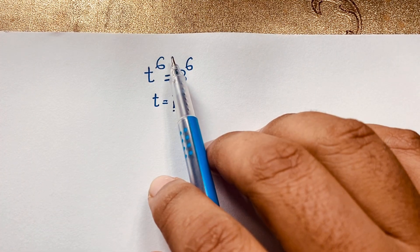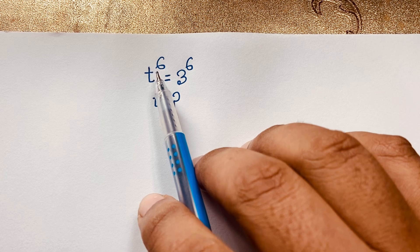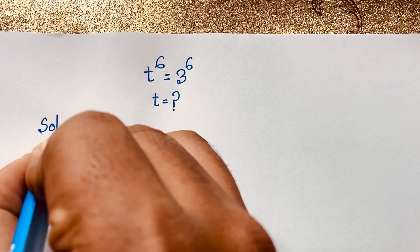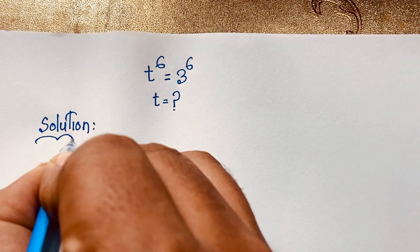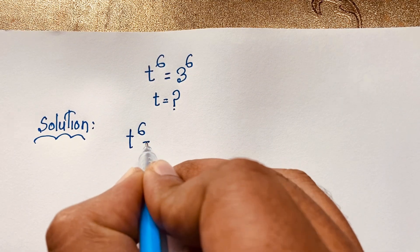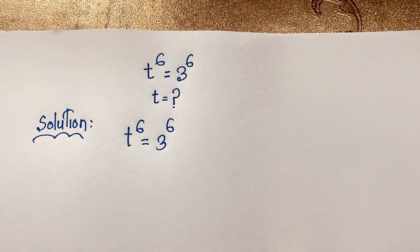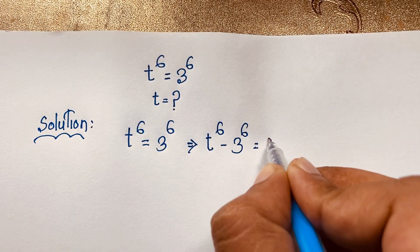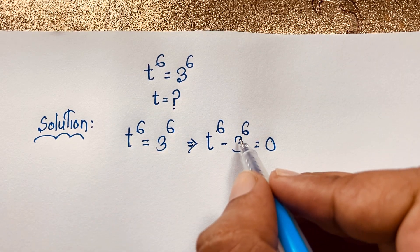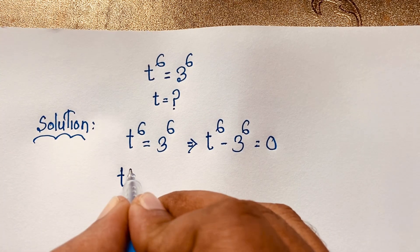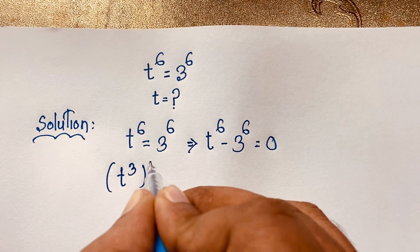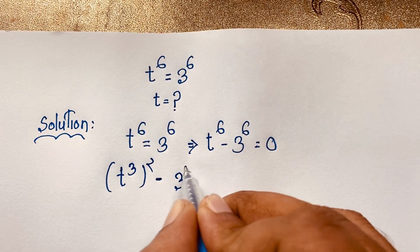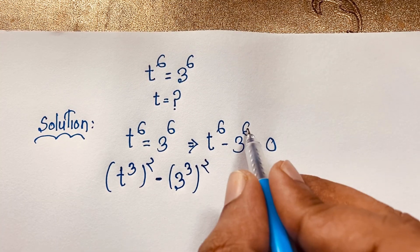But this is t to the power 6, so there are 6 answers in this exponential math question. How to simplify this for t? Our question is t to the power 6 equals 3 to the power 6. We can rewrite this expression as t to the power 6 minus 3 to the power 6 equals 0, moving the right side to the left as negative. Now t to the power 6 is (t to the power 3) squared, and 3 to the power 6 is (3 to the power 3) squared, so we have (t³)² minus (3³)² equals 0.